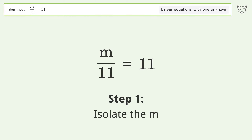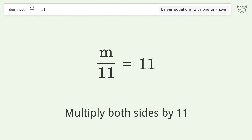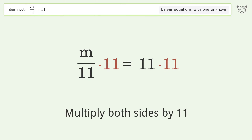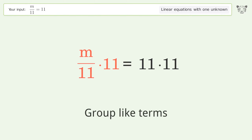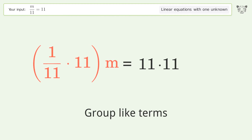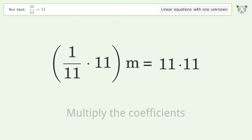To isolate m, multiply both sides by 11. Then group like terms, and multiply the coefficients.